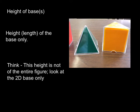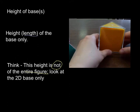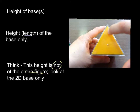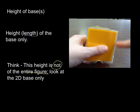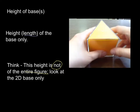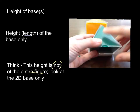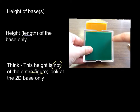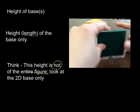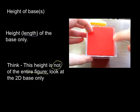Now let's talk about the height of the base. The height — which could also be called a length — of the base only, not of the entire prism. So you've got to think about the height of not the entire figure; we're looking at the base only. In this prism, the height of the base would be this distance here, whereas the height of the prism was the whole entire prism. Now we're only looking at the base, which is this piece right here. On this pyramid, the height of the pyramid is how tall it is, but the height of the base would be just this right here.